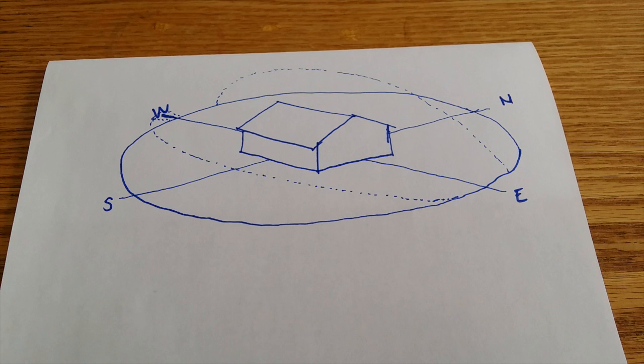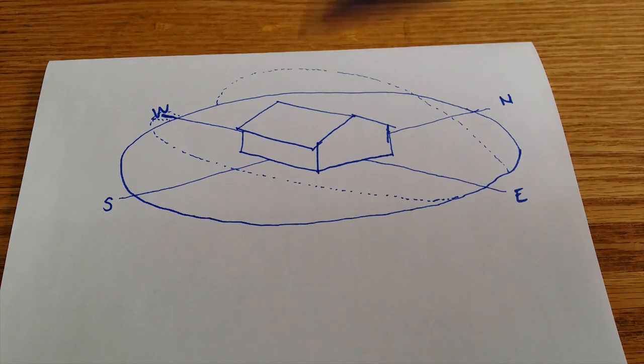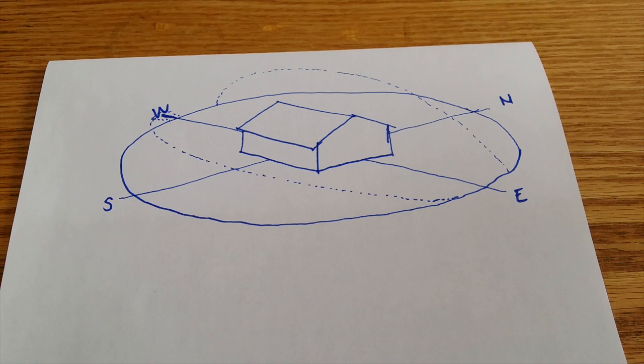This applies to the northern hemisphere. If you were in the southern hemisphere this would all be the opposite where the north facade would act as a south facade where it would get all of that sunlight and then the south facade would be the one that's in shading.